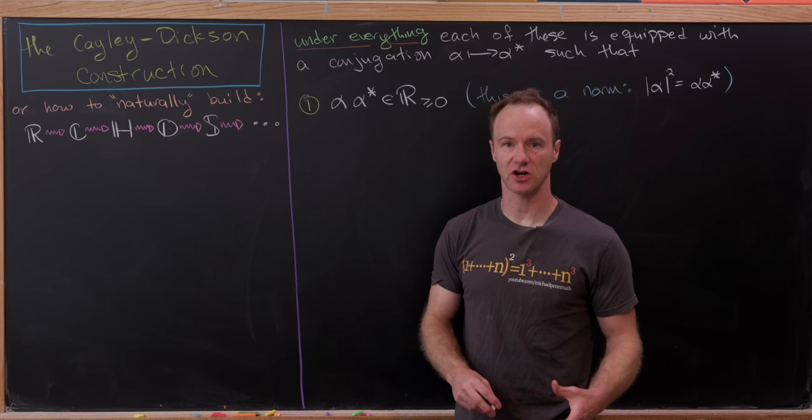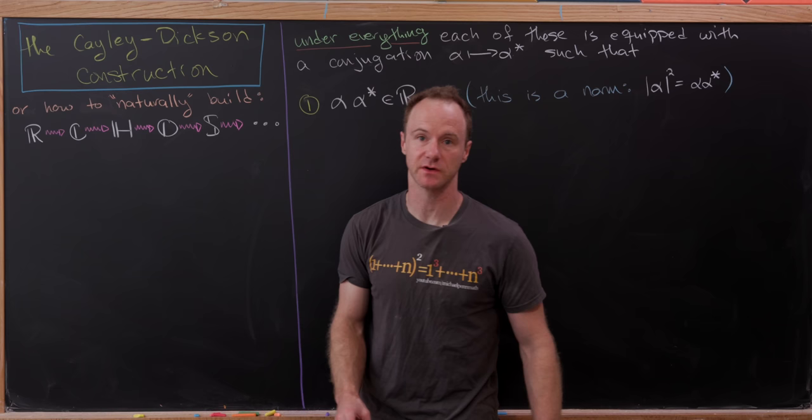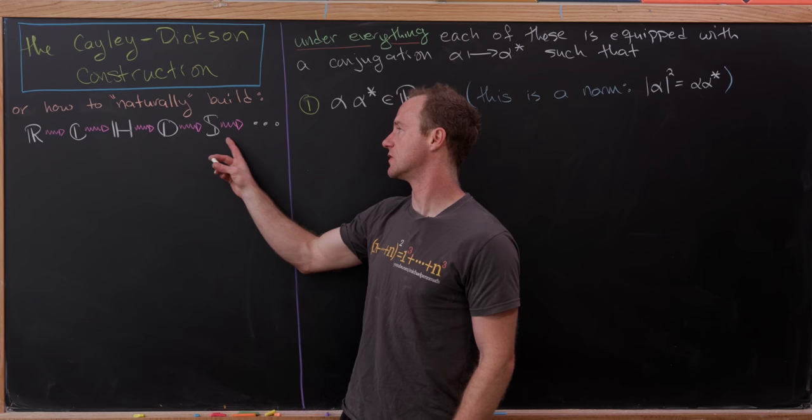Today I'd like to talk about something called the Cayley-Dixon construction, or how to naturally build the sequence of algebras starting at the real numbers, and then going through the complex numbers, the quaternions, the octonions, the sedenions, and so on and so forth.